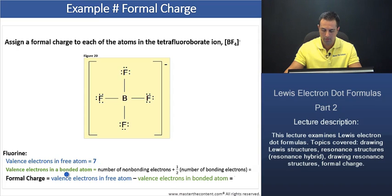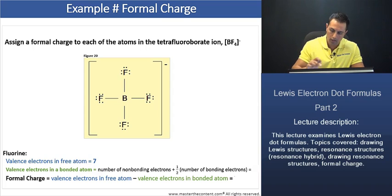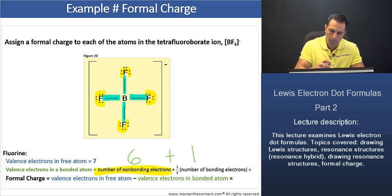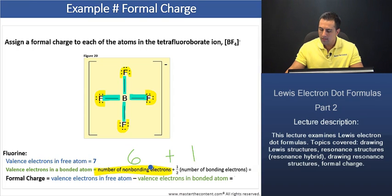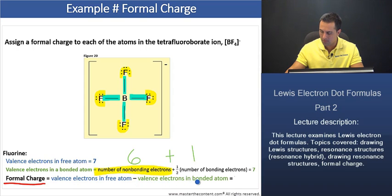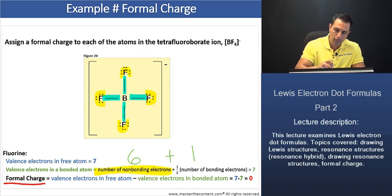Next, let's find the number of valence electrons in a bonded fluorine atom. That's simply just going to be the number of non-bonding electrons. As you see here, each fluorine atom has six unshared electrons. So that's going to be six plus, and it also donates one electron for the covalent bond as well, which is simply the one half of the number of bonding electrons. Six plus one is seven. Now, because each of these fluorine atoms are equivalent to one another, we can then just say that the formal charge for the fluorines is simply going to be the valence electrons in a free atom, seven, minus the valence electrons in the bonded fluorine atoms, which is seven. The formal charge is simply going to be zero.